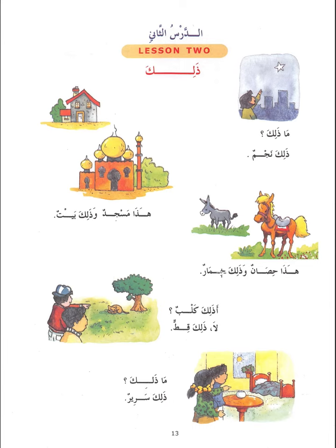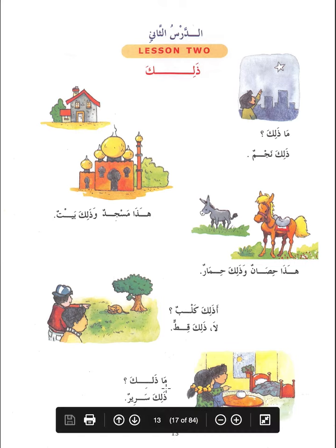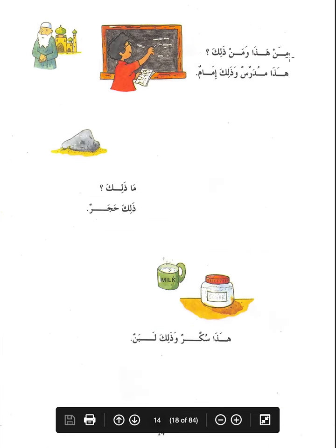هذا حصان — this is a horse. وذلك حمار — that is a donkey. أذلك كلب — is that a dog? The child is pointing to the cat asking, is it a dog? لا — no. ذلك قط — that is a cat. ما ذلك — what is that? ذلك سرير — that is a bed.